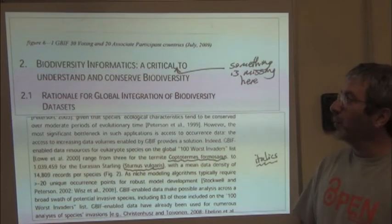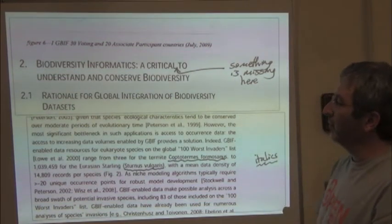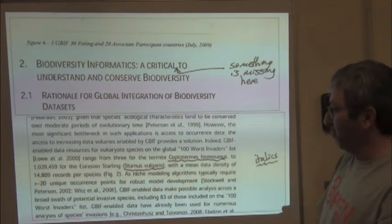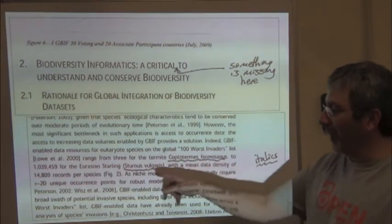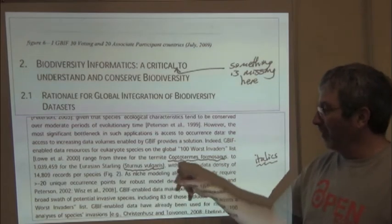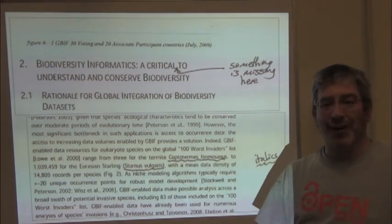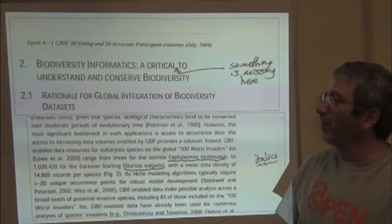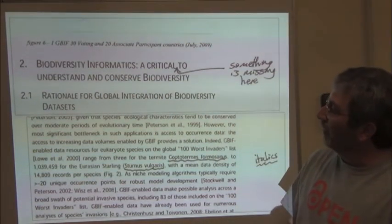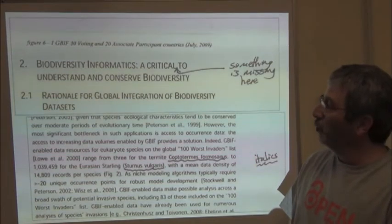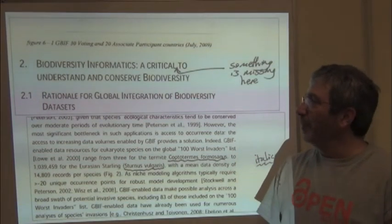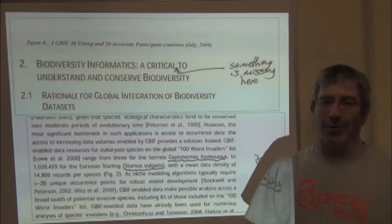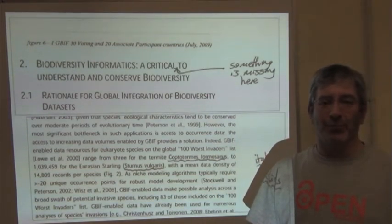Here are proofs of a book chapter that I recently participated in, and basically we've got some problems here. We're all biologists, and so the last thing we want to see is scientific names that are not italicized. Or, for example, a title that's wrong — 'biodiversity informatics, a critical to understand and conserve biodiversity' — something's missing. So these are big problems we really don't want to see at the proof stage.